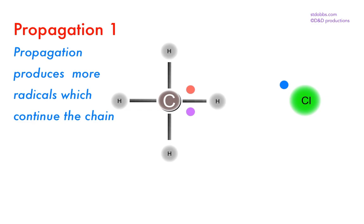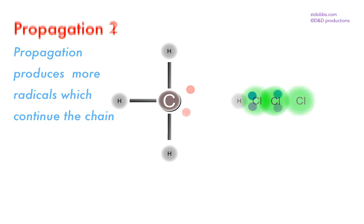The next steps are a series of propagation reactions. Free radicals are reactive and will strip electrons from bonds to pair up and form new bonds. In this case a chlorine radical strips an electron from a methane molecule to yield hydrogen chloride gas, also producing a methyl radical which itself is reactive.